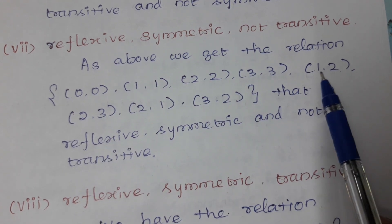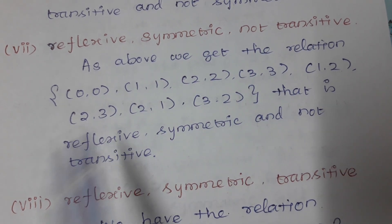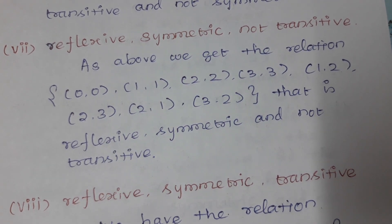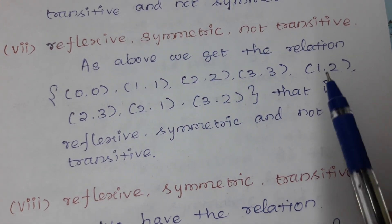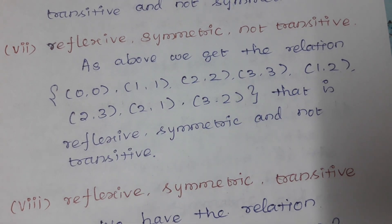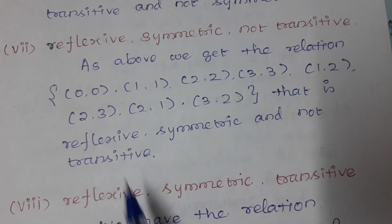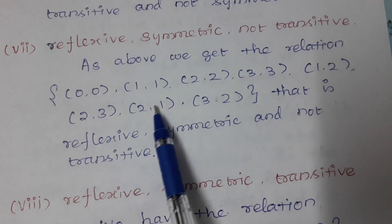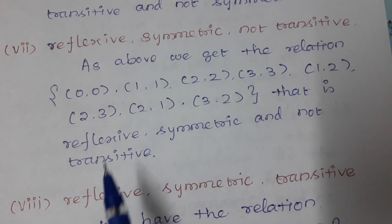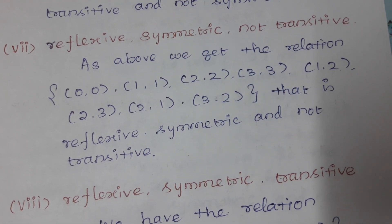Here (1,3) is in the relation as (a,c). As per the transitive definition, with (1,2) and (2,3), (1,3) should be present, but it is not, so it is not transitive.